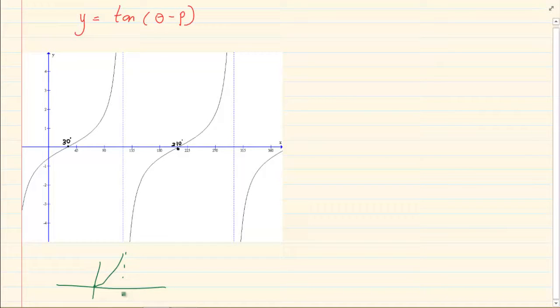But it didn't start on 0 degrees. Where did it start? On 30 degrees. So we know Y is going to equal to tan theta minus 30 degrees.